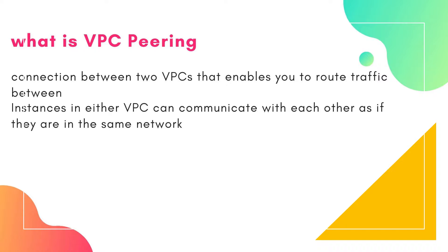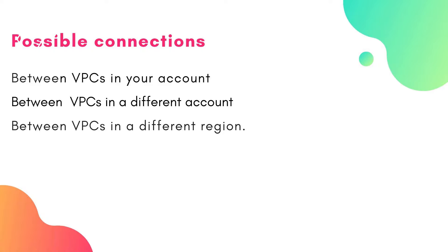The possible ways of connections in VPC peering are: between VPCs in your account, between VPCs in different accounts, and between VPCs in different regions. This helps you to avoid connection methods like VPN or other connectivity methods because this gives you some advantages in terms of security. All traffic remains in the same private IP space, all inter-region traffic is encrypted with no single point of failure, and the traffic always stays on the global AWS backbone network — it never goes through the public internet.